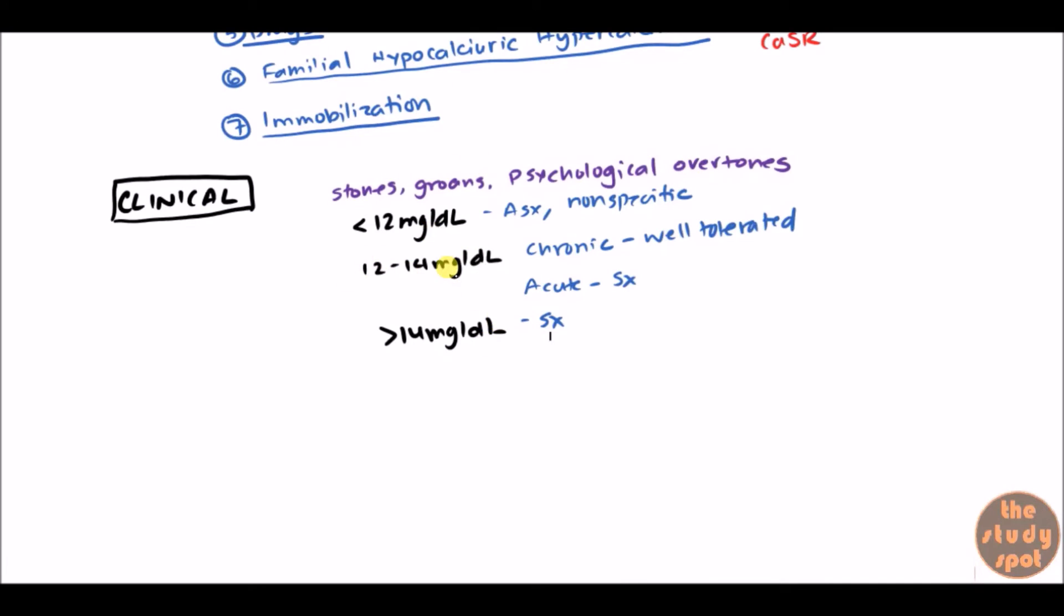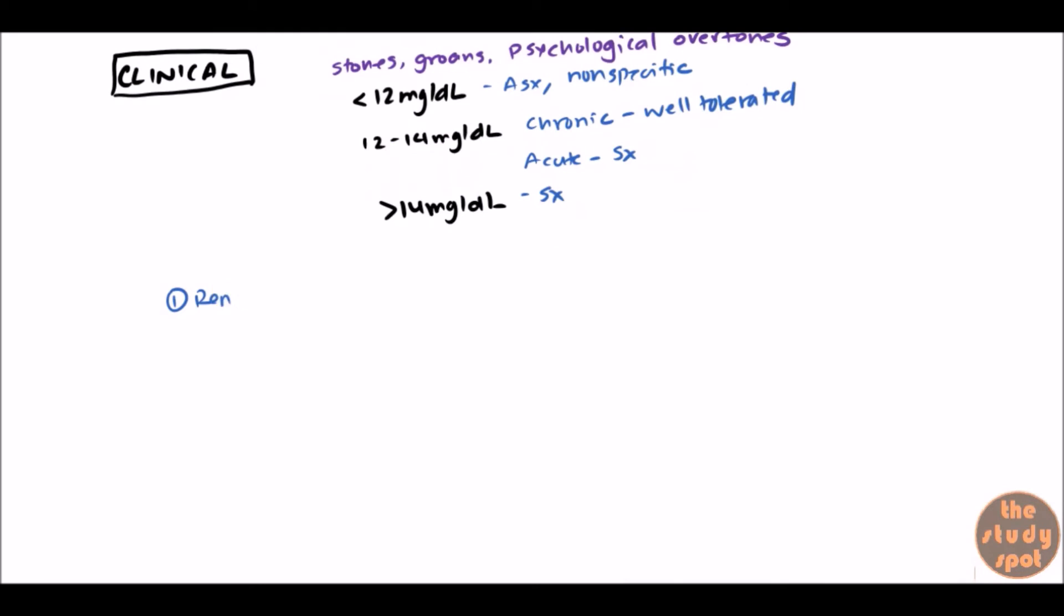So let's go over exactly what these stones, groans, and psychological overtones means. So first of all, with stones, that kind of points to renal symptoms. So of course, kidney stones, right? But besides that, there are other effects on the kidneys such as you get renal tubular acidosis type 1, which is a problem with the distal side, reabsorption of the protons. This can also develop nephrogenic diabetes insipidus. And this develops polyuria polydipsia. So that's another type of thing you want to look for in hypercalcemia. And eventually, renal insufficiency. So the calcium can start depositing in the interstitium and that can cause eventual insufficiency.